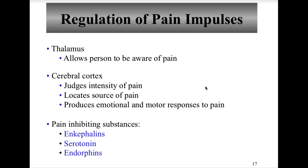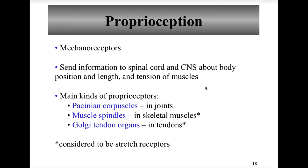Artificial pain relievers include OTC drugs that block the formation of prostaglandins, which stimulate nociceptors; these include aspirin (acetylsalicylic acid), Tylenol (acetaminophen), and Motrin (ibuprofen). Narcotics mimic natural pain relief by blocking nerve impulses and include morphine, Vicodin, and Demerol. Surgery may also be necessary: a cordotomy involves severing nerve sensory areas, and a rhizotomy involves cutting the spinal dorsal sensory nerve roots.